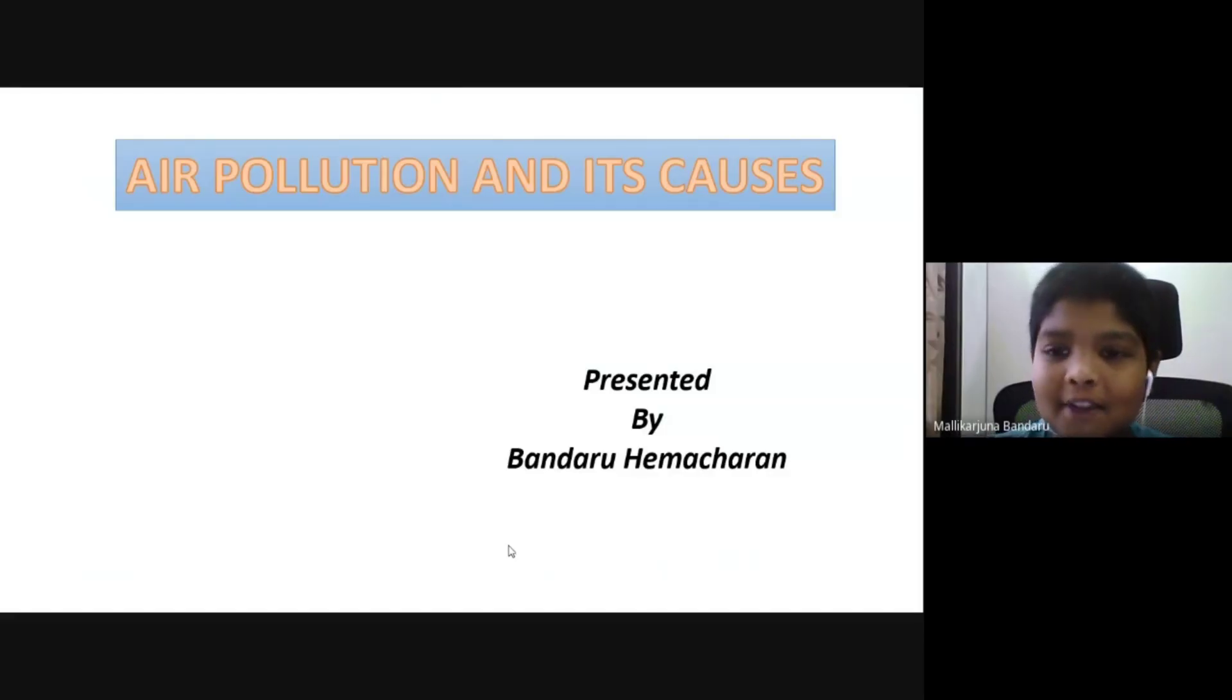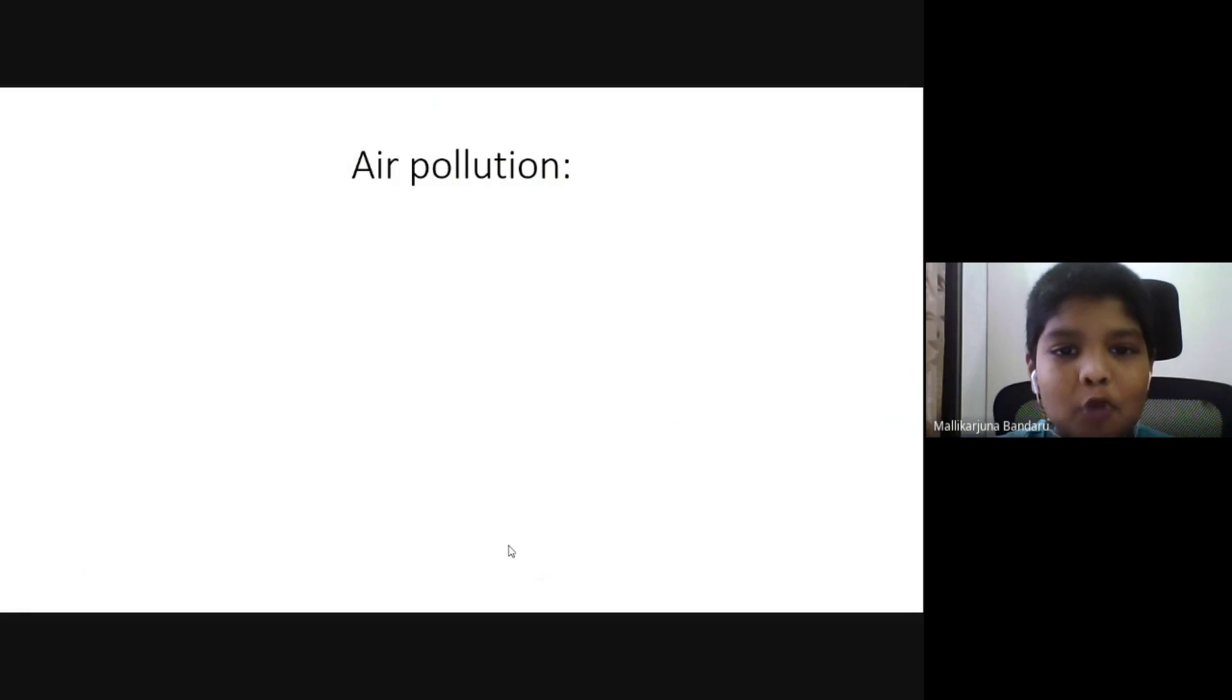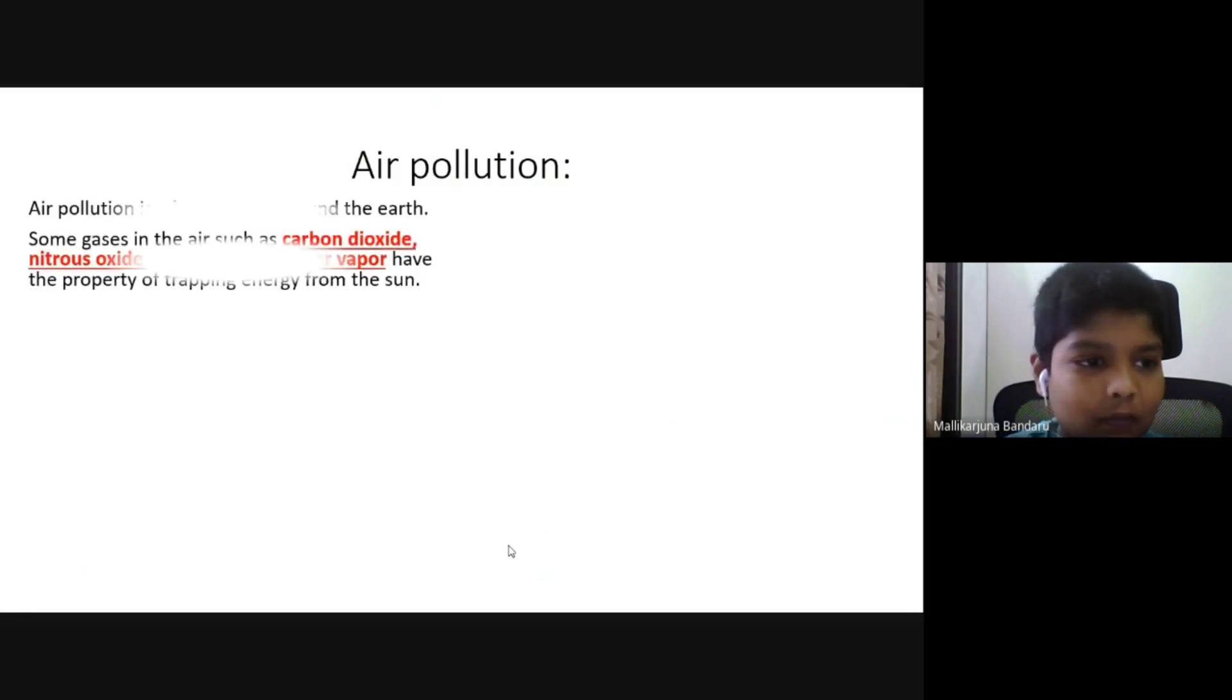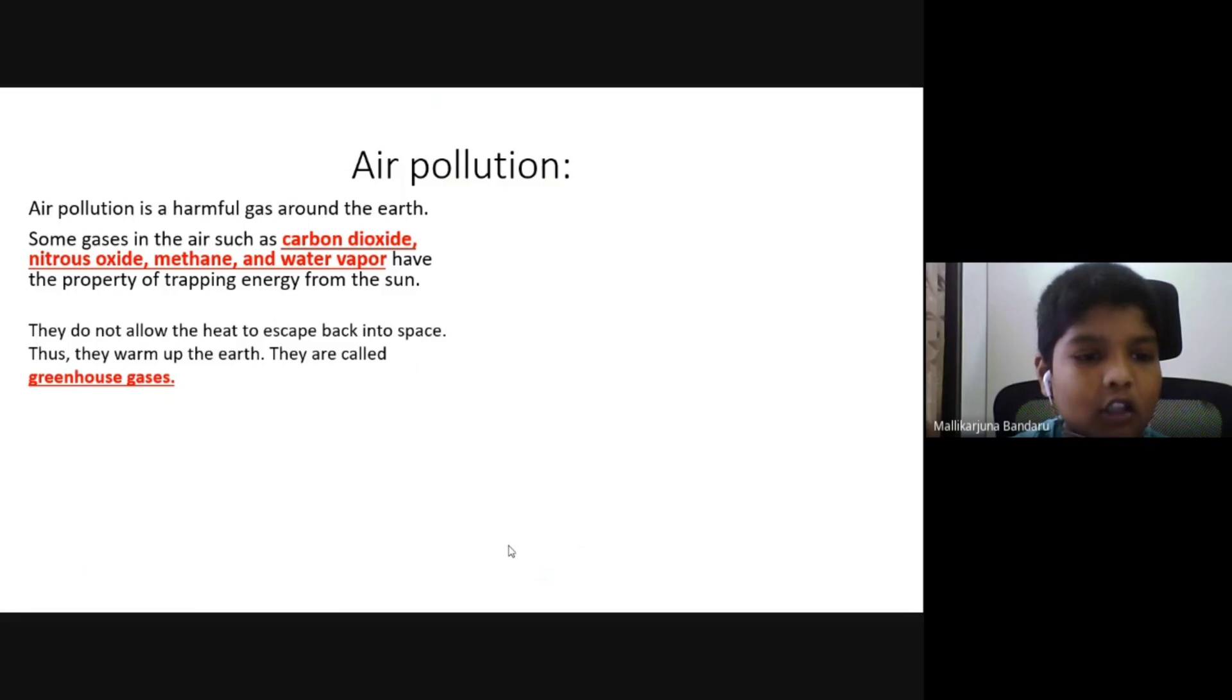Air pollution and its causes. Air pollution is a harmful gas around the Earth. Some gases in the air such as carbon dioxide, nitrous oxide, methane and water vapor have the property of trapping energy from the sun. They do not allow the heat to escape back into the space. Thus, they warm up the Earth. They are called greenhouse gases.